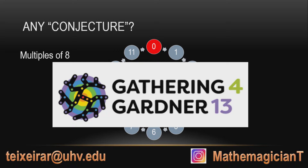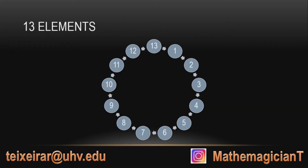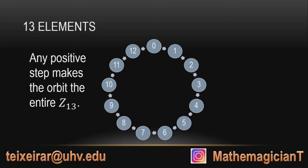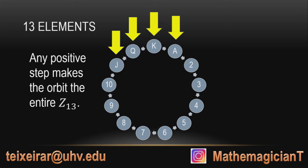Since this is Gathering for Gardner 13, let's do the same thing with 13 elements. 13 is good because 13 is prime. So any number will have no common divisors with 13 because 13 is prime. So 13 will be my number 0. I'm going to do the calculation modulus 13, and any positive step will make the orbit of the entire Z13. The good thing about 13 is because we can actually replace these numbers with cards.